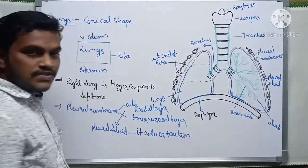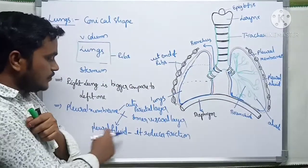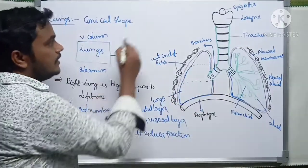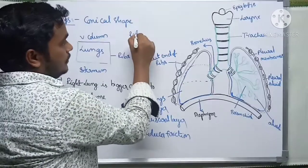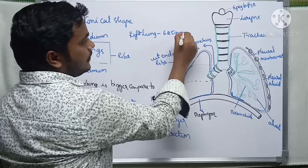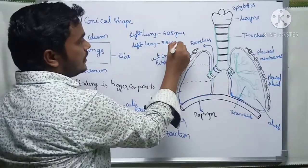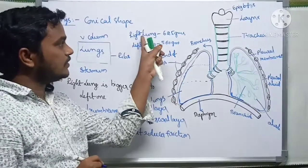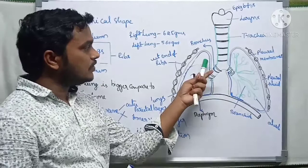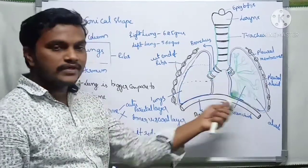The right lung weighs approximately 625 grams, while the left lung weighs approximately 560 grams. The right lung has three lobes: anterior (superior), median, and posterior. The left lung has only two lobes: anterior and posterior.